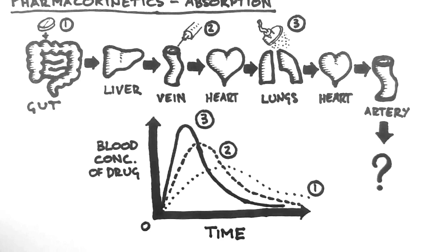It will take the same amount of time for the drug to reach half of the Cmax orally as it will to reach half of the Cmax intravenously. This is because the Cmax is different for each route of administration, and the rate of excretion is proportional to the current concentration of the drug.